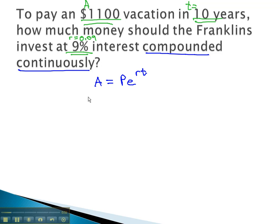We can start plugging this into the formula to get 1,100 equals P times e to the r, or .09, times time, which is 10.